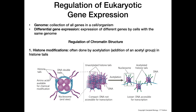One way cells regulate gene expression is through histone modification. Histone modification is often done by acetylation, which means we're adding an acetyl group to these histone tails. As you can see in this picture, these are our histone tails, and on them we have specific amino acids that are available to be chemically modified. Unacetylated histone tails are typically associated with reduced transcription levels.